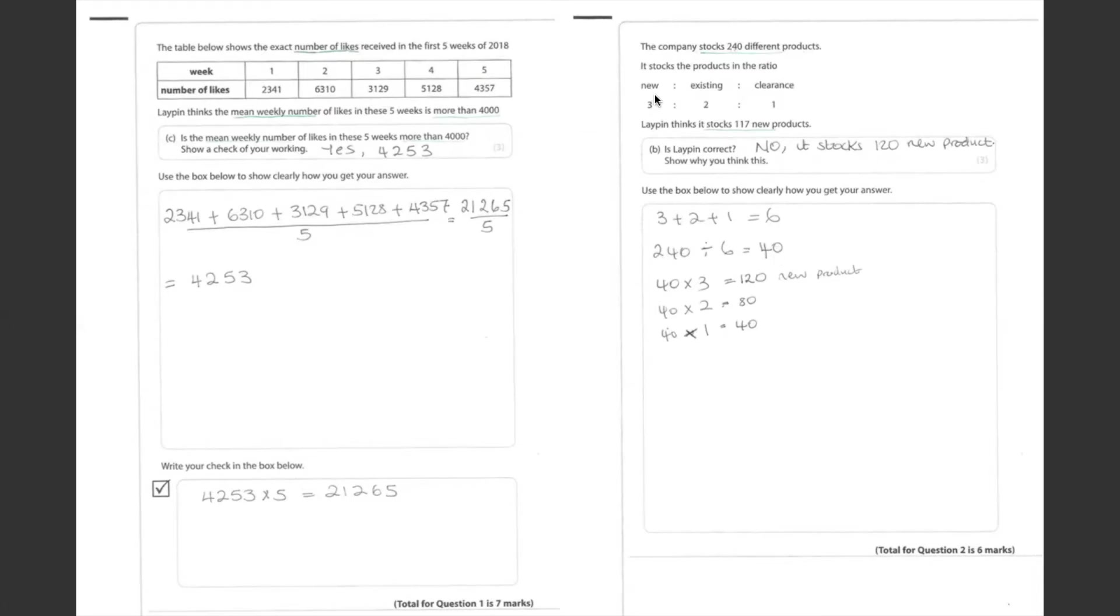The ratio for new is 3. We do 40 times 3 is 120. And for existing, it's 2, ratio is 2. We do 40 times 2 gives us 80. And the ratio for clearance is 1. We do 40 times 1, it's 40.